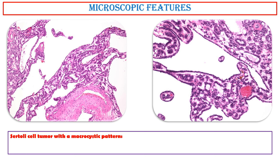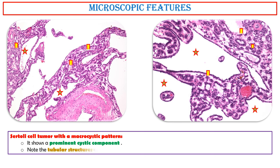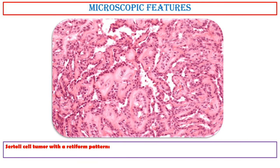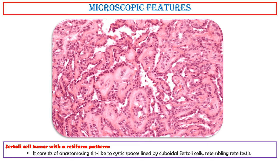Sertoli cell tumor with a macrocystic pattern shows a prominent cystic component. Note the tubular structures within the septa between the cysts. Sertoli cell tumor with a retiform pattern consists of anastomosing slit-like to cystic spaces lined by cuboidal Sertoli cells, resembling rete testis.